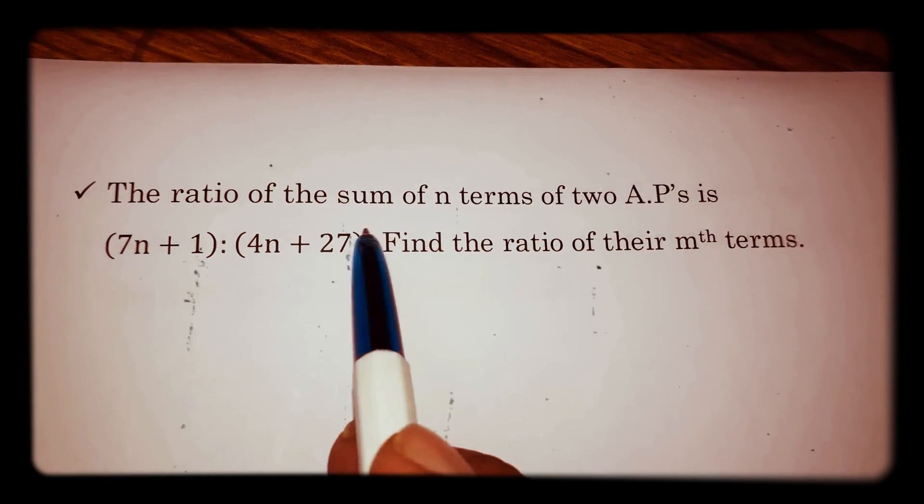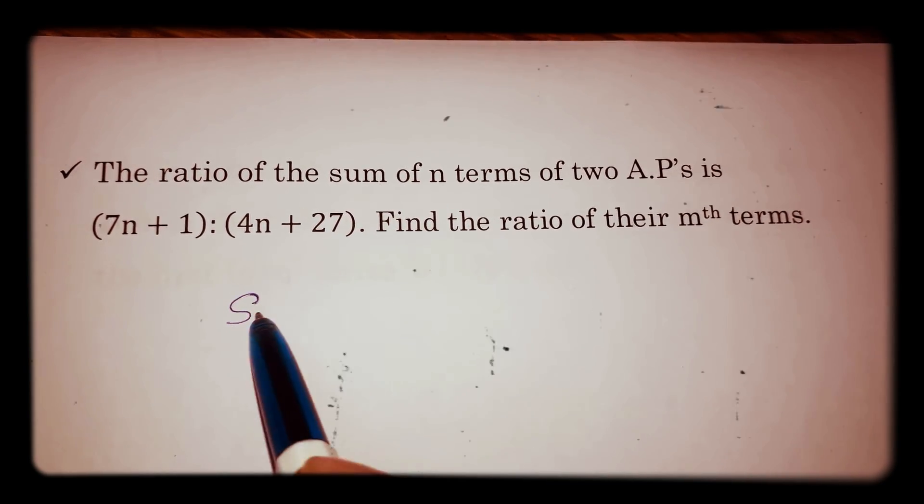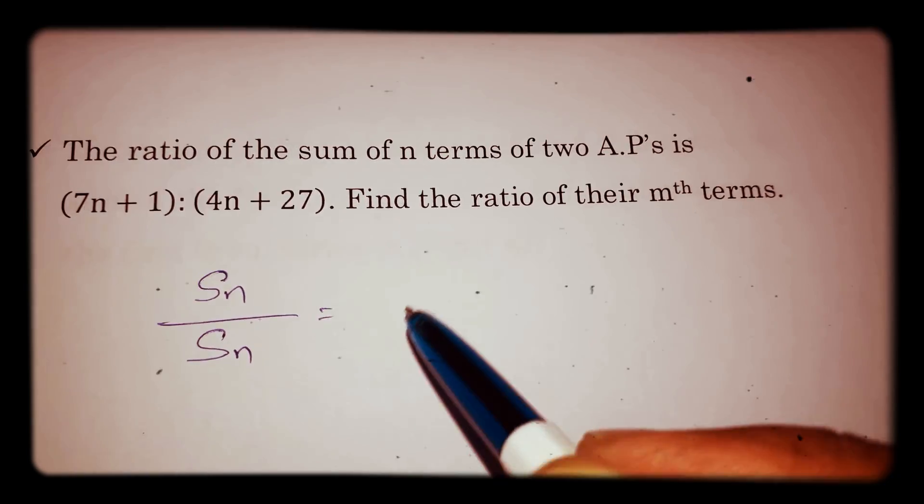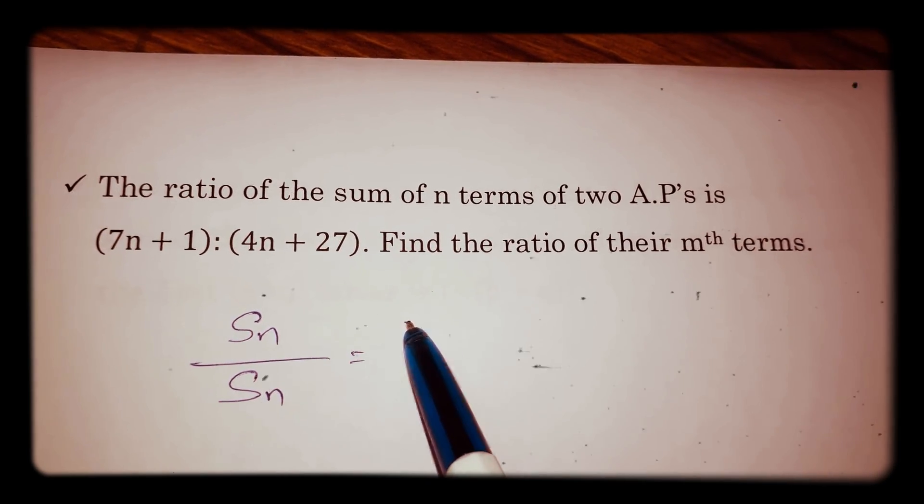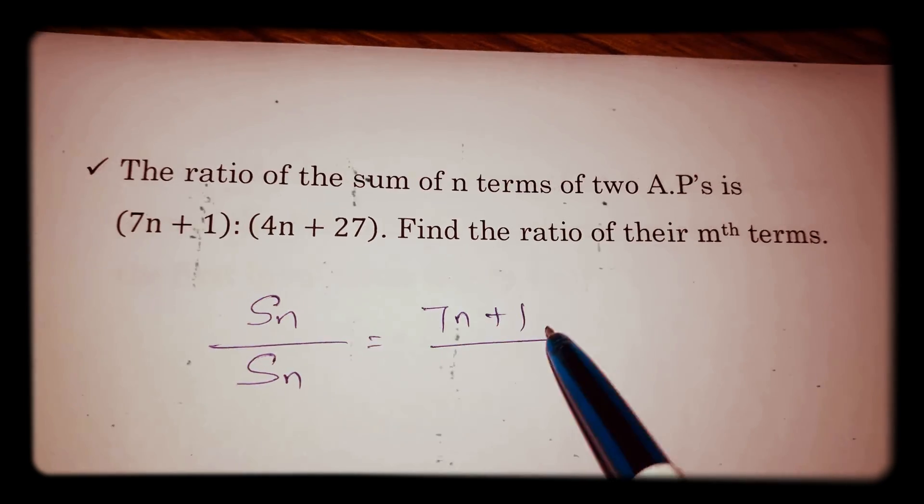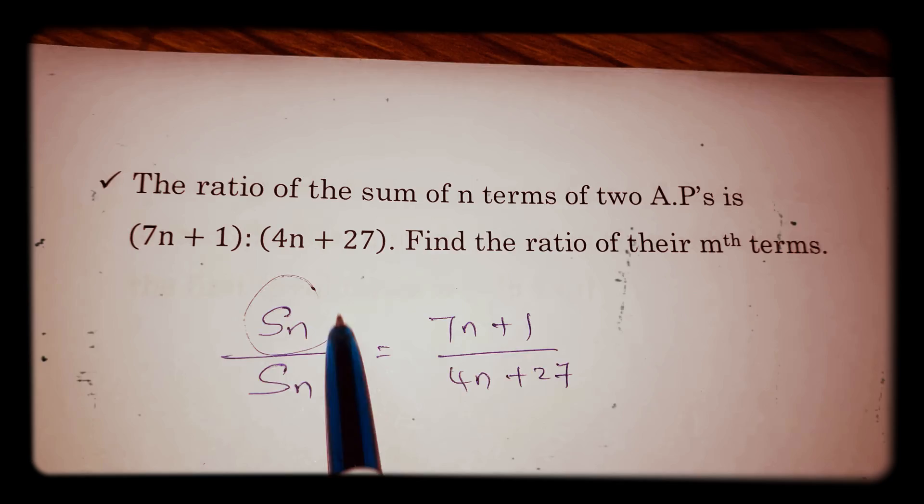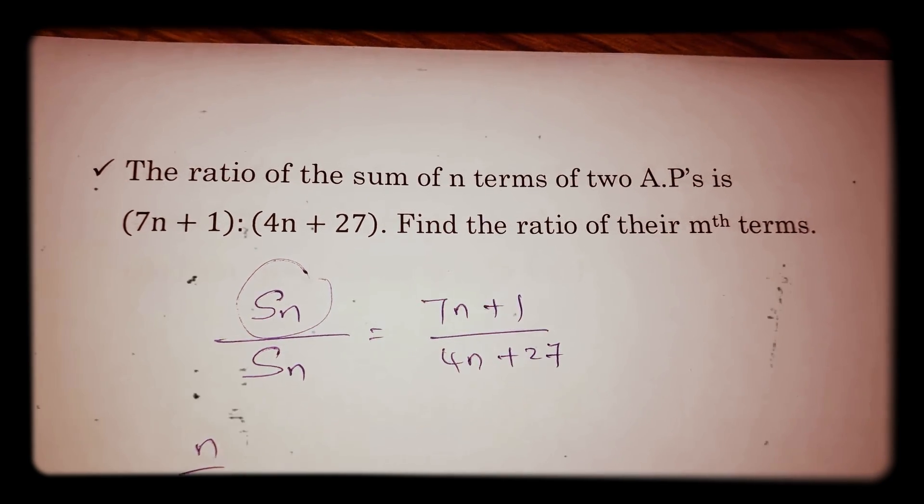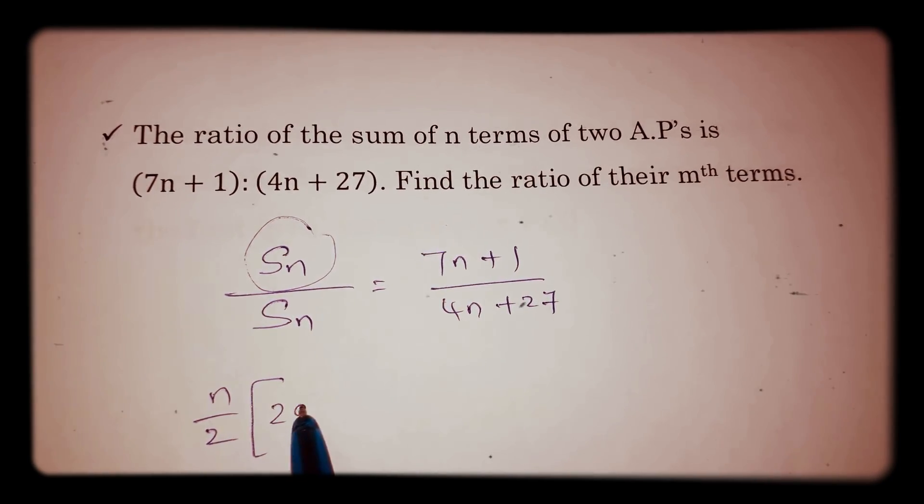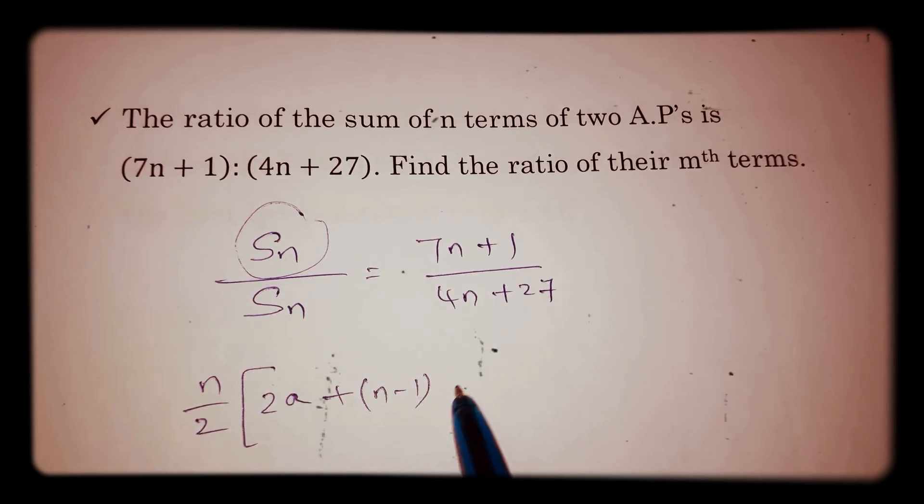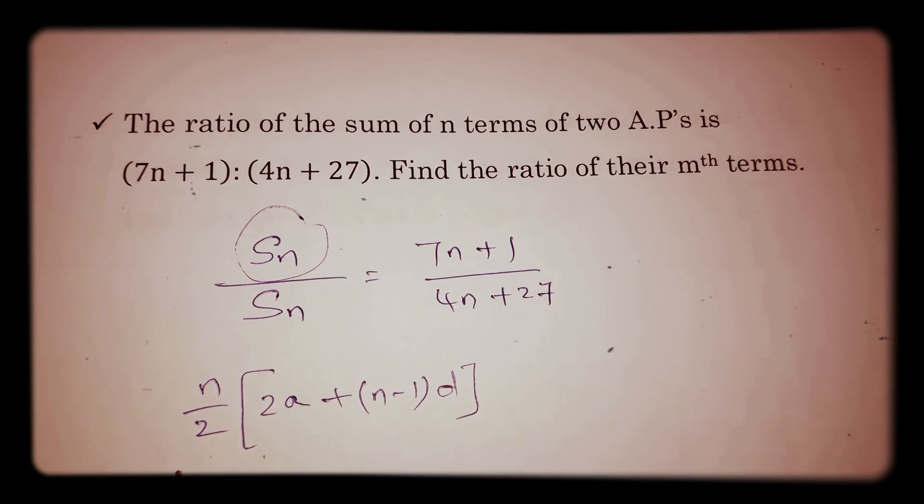The ratio of sum of n terms, Sn by S'n, is (7n+1) by (4n+27). What is Sn? n/2 into [2a + (n-1)d]. For another series, the number of terms is the same.